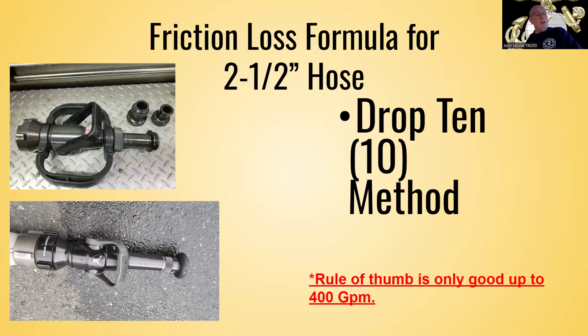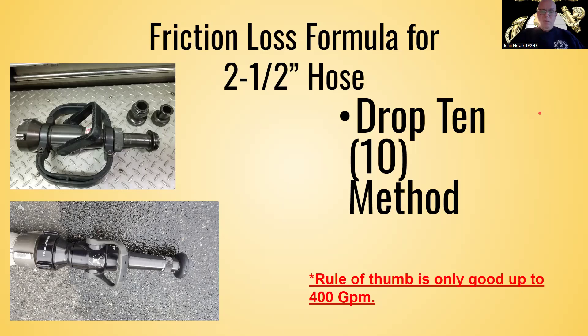So for the two and a half friction loss calculations, we can use this rule of thumb formula. You can also find it in the IFSTA manual, where my rule of thumb formula is we subtract 10. If you look at the IFSTA manual, they use the GPM flowing method, which is basically, you take the gallons per minute, and you subtract 10 from the first two numbers. This is also a rule of thumb formula, and it's usually good up to 400 gallons a minute for our two and a half inch hose or two and a half inch nozzles.